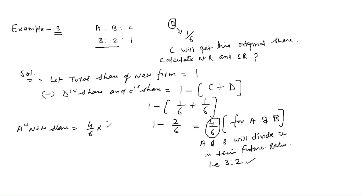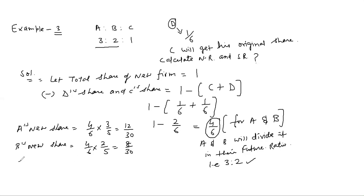A's new share: 4/6 × 3/5 = 12/30. B's new share: 4/6 × 2/5 = 8/30. C's new share is the fixed share already given: 1/6.